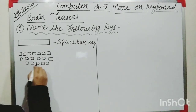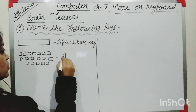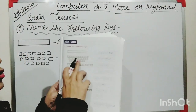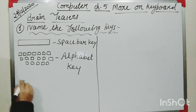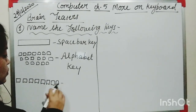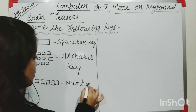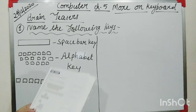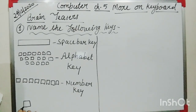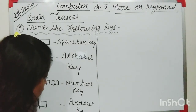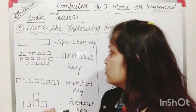Second one — which key is this? You will write Alphabet key. Third one is Number key, so write Number key. Fourth one — A-R-R-O-W — this is Arrow key. So write Arrow key for the fourth answer.